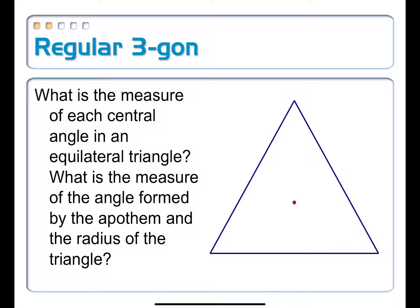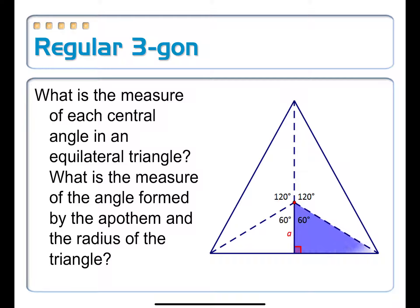What is the measure of each central angle of an equilateral triangle? Drawing in each central angle, I have three of them and the total is 360 degrees, so 360 divided by 3 is 120 degrees. When I draw in the apothem, it bisects that central angle: 120 divided by 2 gives 60 degrees. This creates an isosceles triangle, and drawing the height bisects the top angle, creating two congruent triangles — a 30-60-90 right triangle.